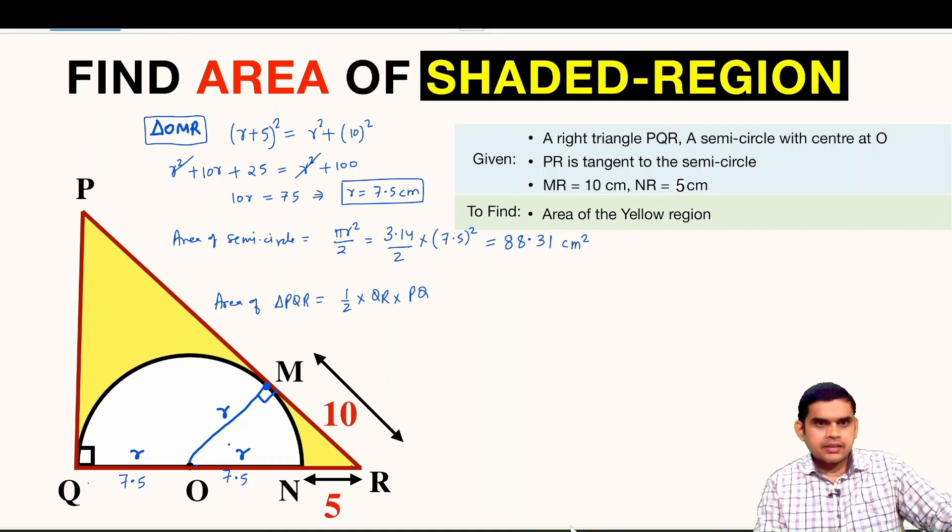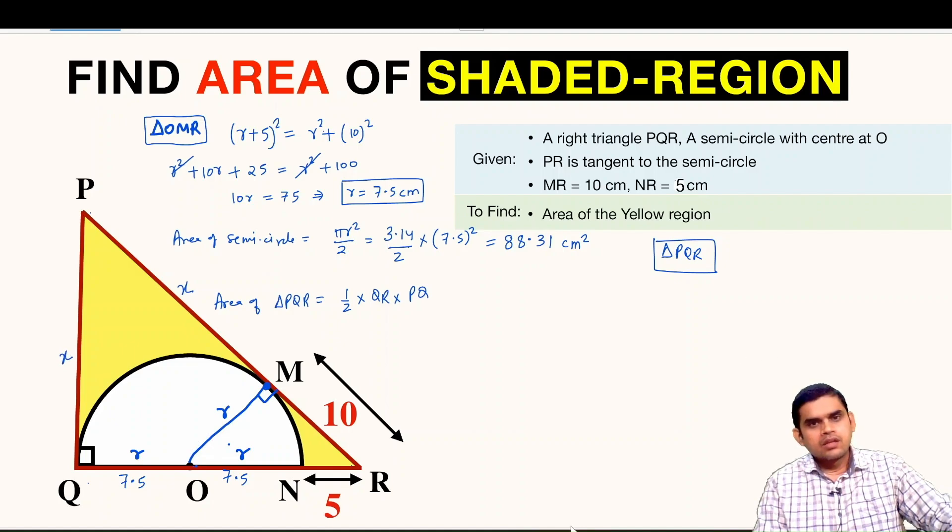So now let us focus on the triangle PQR. In triangle PQR we see that PR is the hypotenuse. Let us take distance PQ as x. So PQ will also be x because P is an external point.